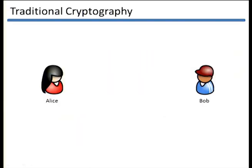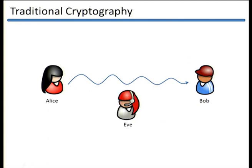Traditionally, cryptography treats the problem of communication between two parties over a public channel. We assume there exists an adversary listening to this communication, and we build schemes such that the adversary can get no information about the message transmitted. However, now encryption is used in more complicated ways, such as satisfying access policies, identity-based encryption, or attribute-based encryption.